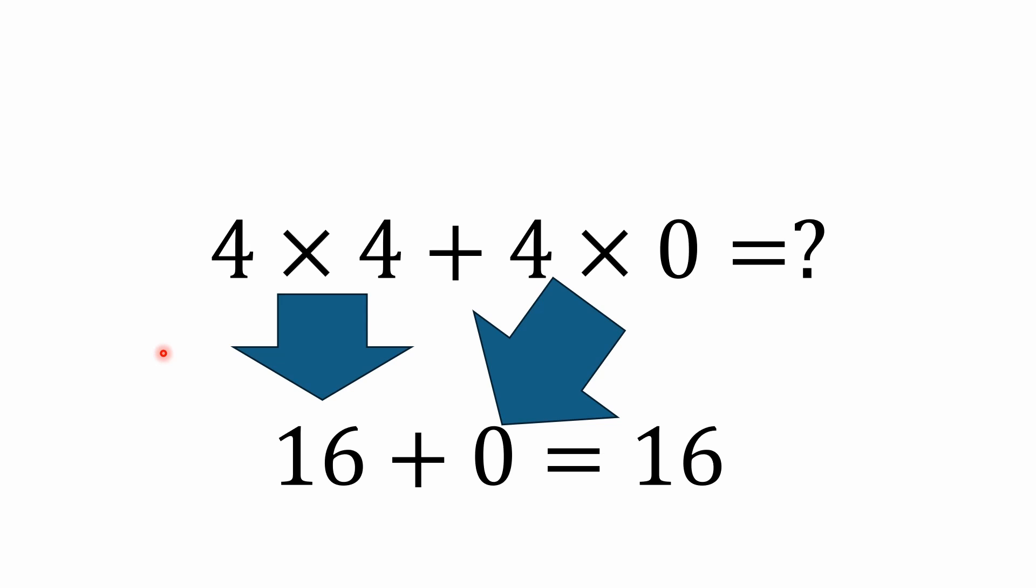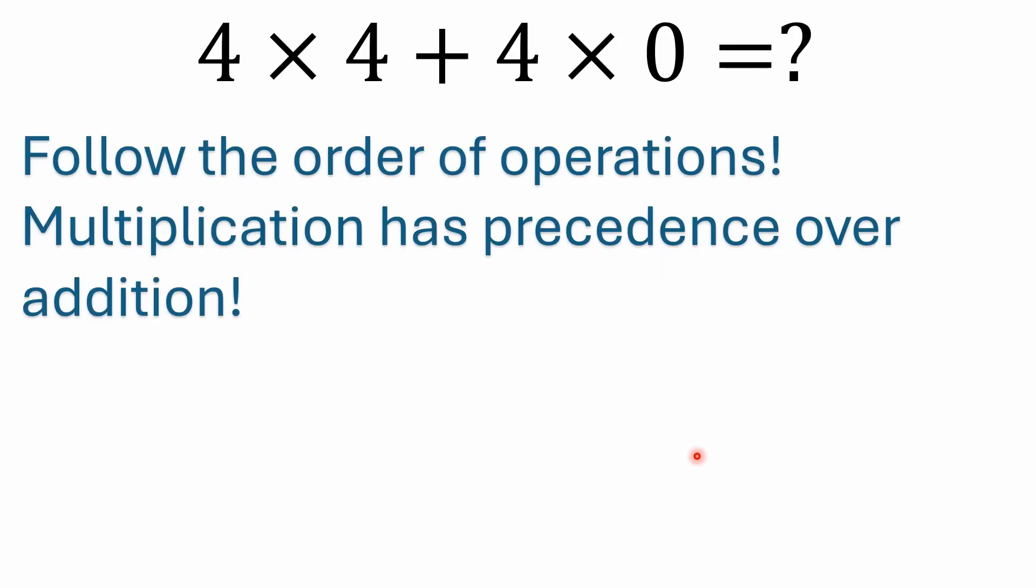All right for those that are still here, basically you got to remember your order of operations convention. It's really simple: multiplication has precedence over addition and that's true whether you've got parentheses or brackets or not. So you have 4 × 4, that's 16, and then you've got 4 × 0 that you need to resolve. Well 4 × 0 is 0, so you got 16 + 0 = 16. A very simple problem.